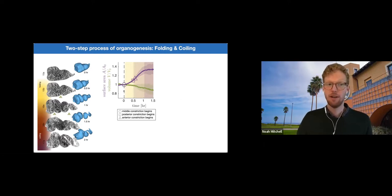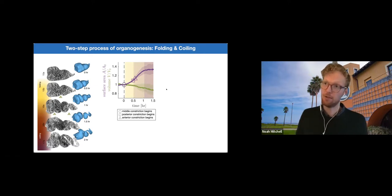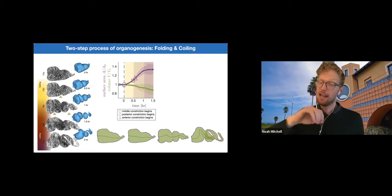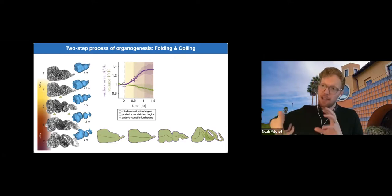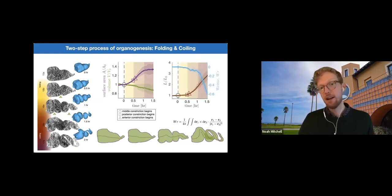We can also, meanwhile, the volume changes only gradually throughout this process. And meanwhile, we can also ask about the length of the organ as characterized by a center line in brown, and also the chirality of this center line measured by the writhe of this curve. And there in blue, we find that the writhe really deviates from zero only after we have completed the folding stage morphogenesis.